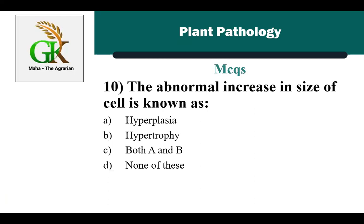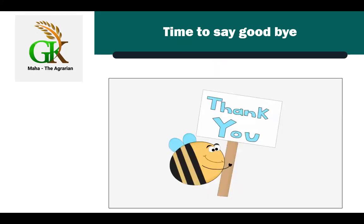The last MCQ is: the abnormal increase in size of a cell is known as — the correct answer is B: hypertrophy. Hyperplasia is the abnormal increase in the number of cells. Thank you so much.